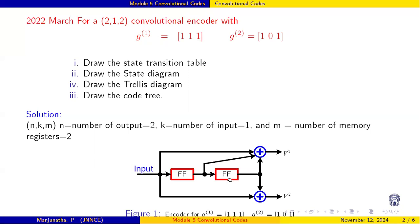These are the 2 memory registers and it has 2 outputs with connectivity. For the first output, there is connectivity from the input, delayed by 1 unit — that is the first flip-flop output — and second time delay, that is flip-flop 2. These are the connections for output 1. Similarly, connectivity for output 2 is 1, with no connection from the first flip-flop output, and the second flip-flop output.